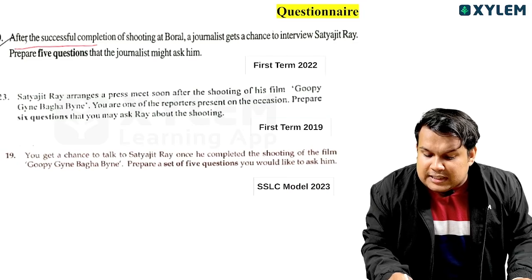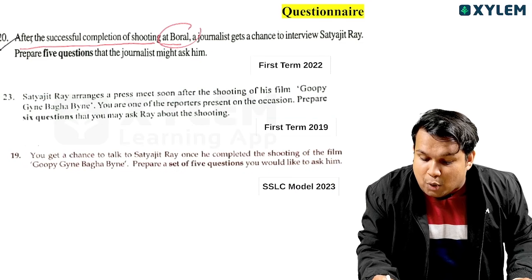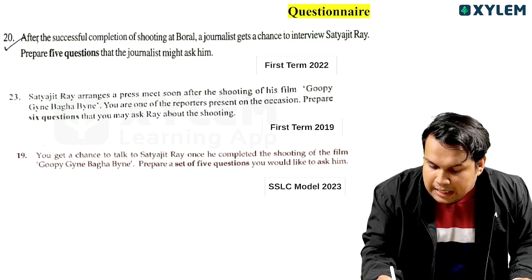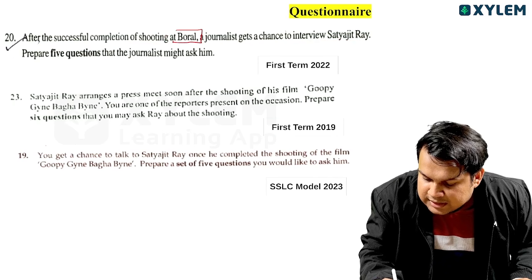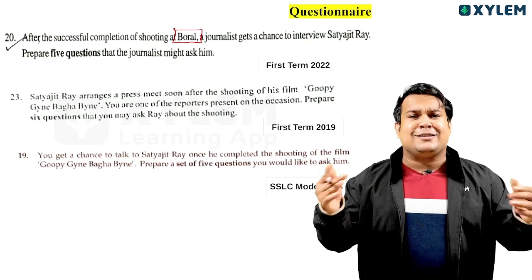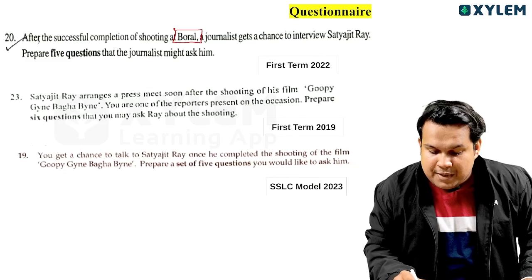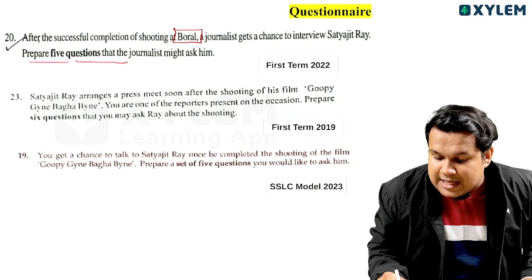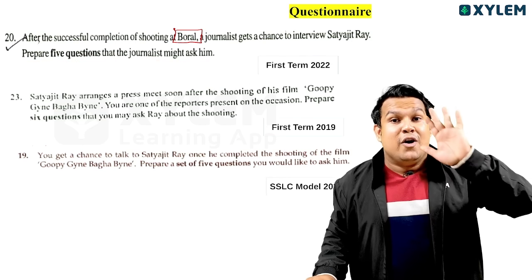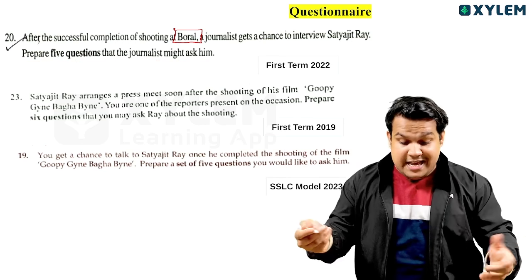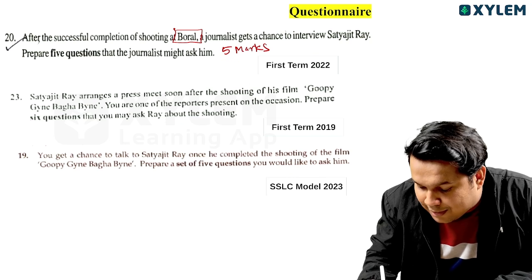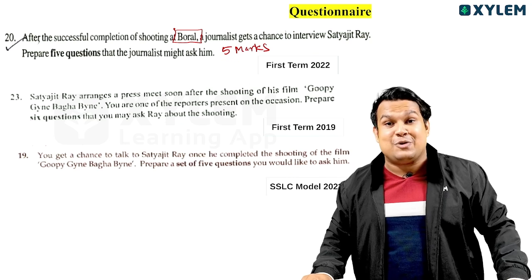After the successful completion of shooting at Boral, a journalist gets a chance to interview Satyajit Ray. Prepare five questions that the journalist might ask him. Each question will fetch you one mark, so that sums up to five marks altogether.